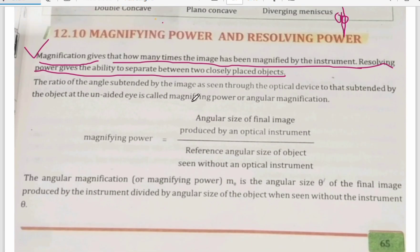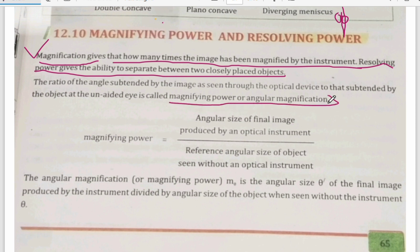The angle subtended by the object as seen by the unaided eye is called the magnifying power or angular magnification. For angular magnification or magnifying power, we have to compare it with that situation when we have not used any lens.